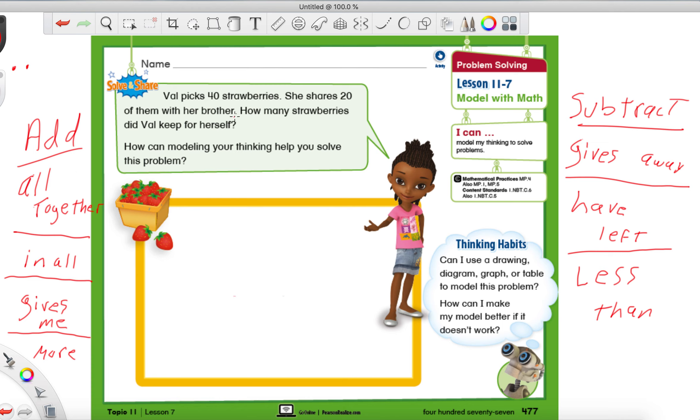So let's read this problem that we have on page 477. And see if we can pick out any special words that might tell us whether we're going to be adding or subtracting. And also, if you see any special numbers, make sure you circle them so we know what we're working with. So Val picks 40 strawberries. Well, 40 seems pretty important. I'm going to circle it. She shares 20 of them with her brother. That's also important. I'm going to circle that number 20. How many strawberries did Val keep for herself?